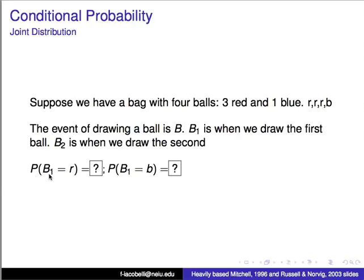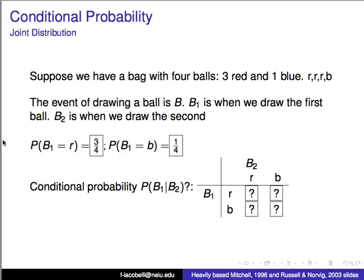What is the probability that on the first draw we obtain a red ball? What's the probability that on the first attempt we obtain a blue ball? The probability that we obtain a red ball in the first attempt is three out of four. The probability that we obtain a blue ball in the first attempt is one out of four.